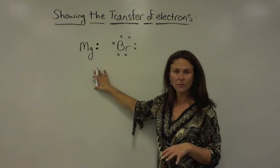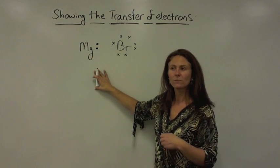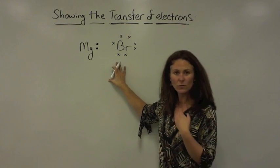Now, magnesium has two electrons to get rid of. So, when it starts releasing these electrons, the bromine atom is going to gain one.